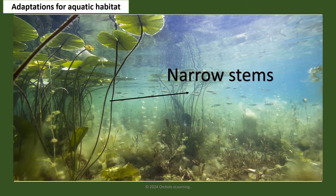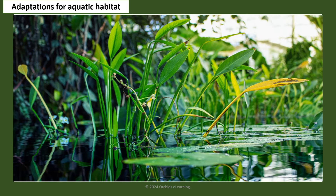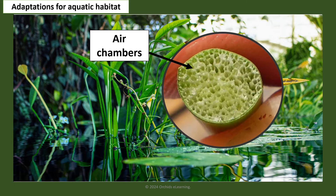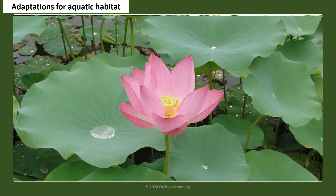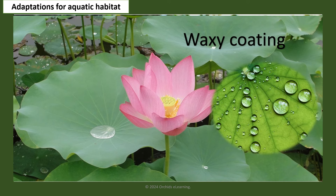Plants that live in flowing water have long, narrow stems to prevent them from being carried away by water currents. Stems have air chambers that allow aquatic plants to float in water. Leaves of plants such as lotus and water lily have a waxy covering that prevents them from rotting.